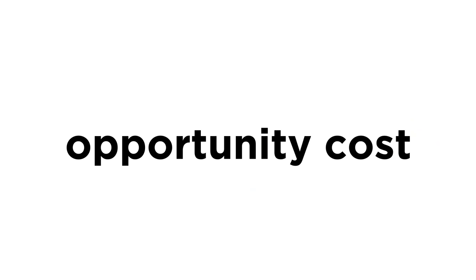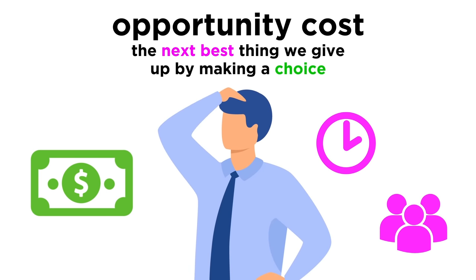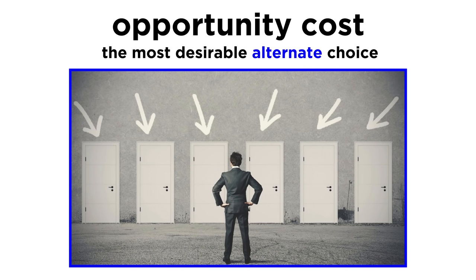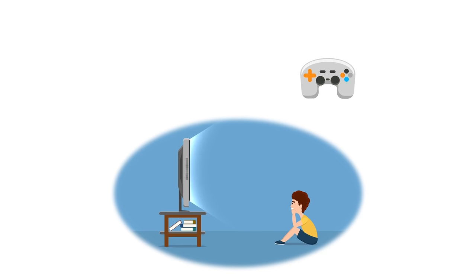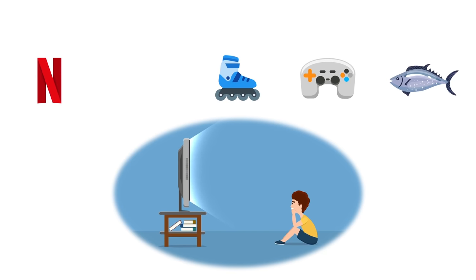Whenever we make a choice, there is always an opportunity cost. Opportunity cost is the next best thing we give up by making that choice. It's essentially the most desirable alternate choice — something which is useful to identify when making decisions, because it reminds us to compare the value associated with various options. Going back to our earlier example of you choosing to watch this tutorial, say you were to rank your alternate choices of playing video games, fishing, rollerblading, watching Netflix, and building birdhouses in this order.